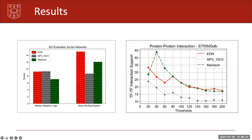We see that EDN performs better than MARBACH. It's a global MARBACH network combined from 32 tissue-specific networks and filtered for TFs and genes in our perturbation dataset.